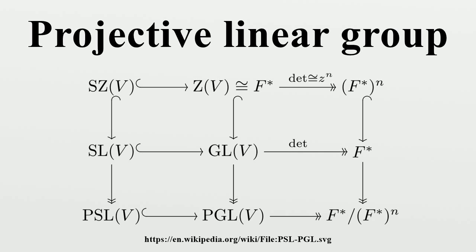PGL acts sharply 3-transitively on the projective line. Three arbitrary points are conventionally mapped to [1,0], [0,1], and [1,1] in alternative notation, or 0, 1, and infinity. In fractional linear transformation notation, the function f(z) = (c-b)(z-a) / (c-a)(z-b) maps a to 0, b to 1, c to infinity, and is the unique such map that does so.